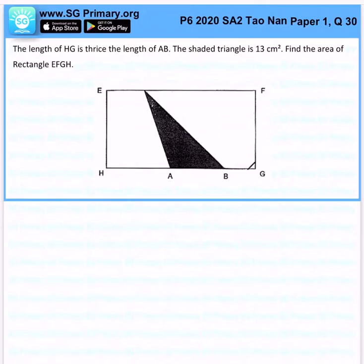If the length of HG is thrice AB, this means this is 1 unit out of the total unit. So take a look at this. The area of the triangle is half times AB times EH, and that is 13cm².